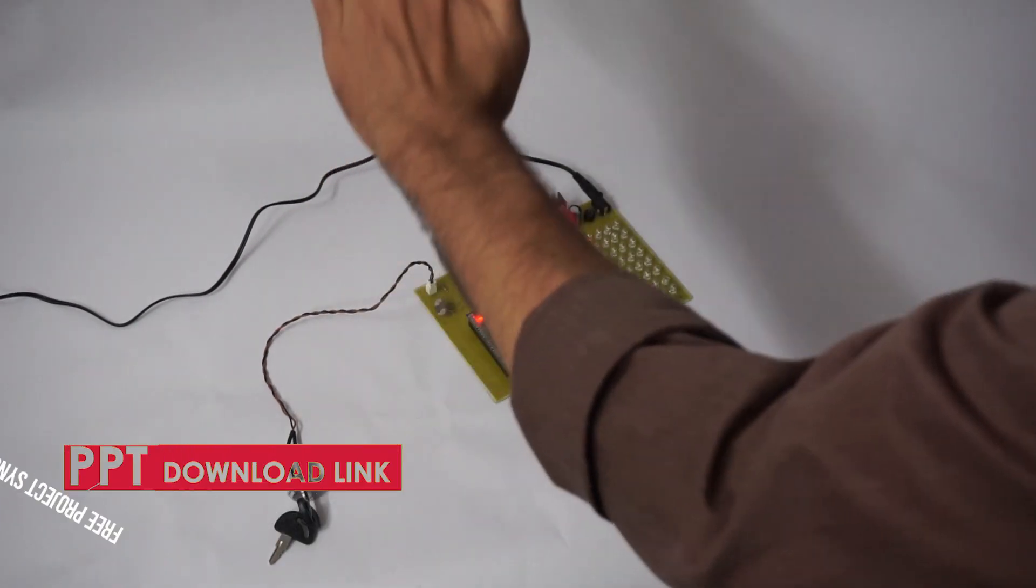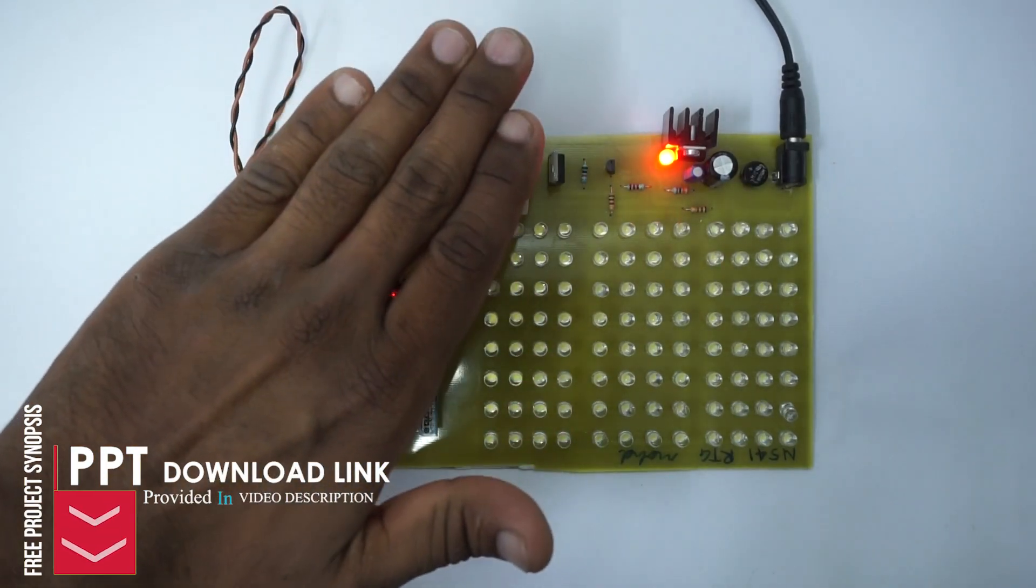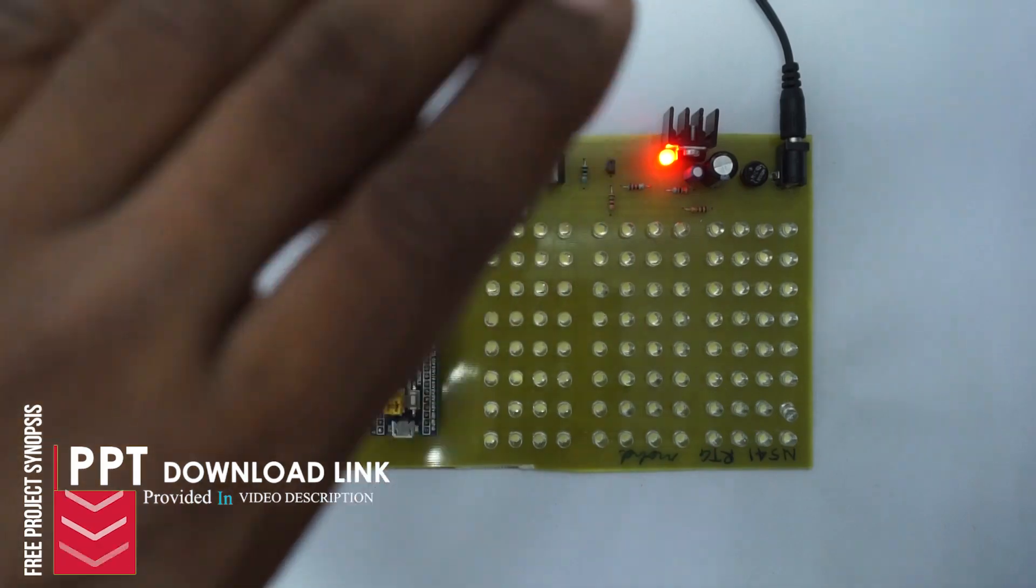The system continuously monitors the external lighting level and adjusts the intensity of the LED light. It dims or increases the brightness to achieve the desired illumination.